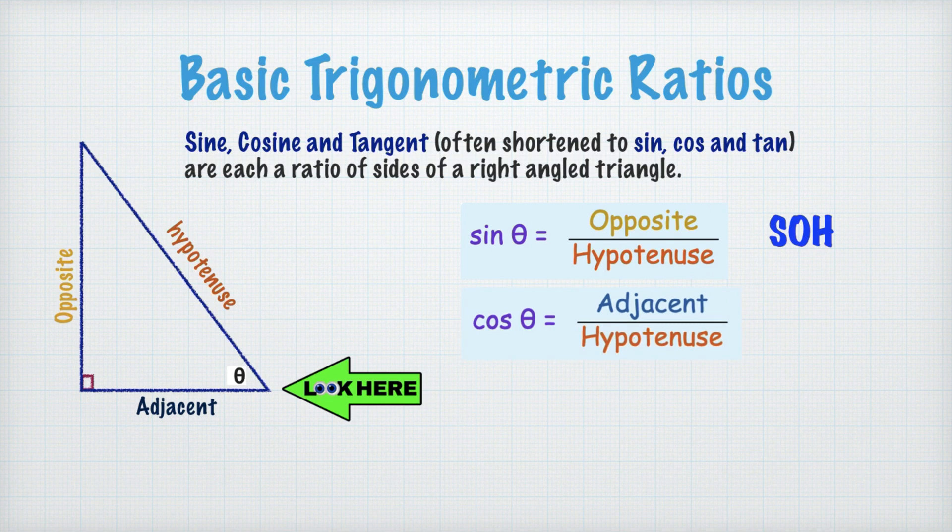And the second one is cos theta. Cos theta is equal to adjacent over the hypotenuse, and we can shorten this into CAH.